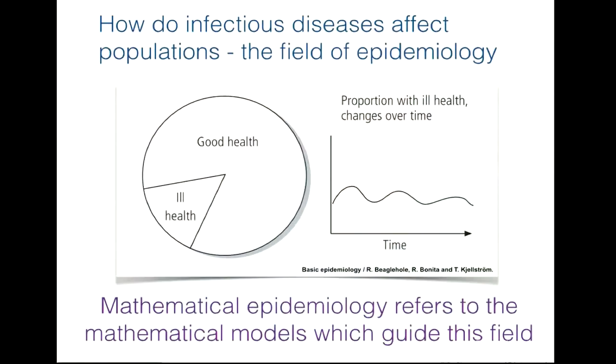The first question of how infectious diseases affect populations is addressed by the field of epidemiology. If we take a full population and divide it into a group of people that have enjoyed good health and a group in a state of ill health, this proportion changes with time. We would like to predict a curve showing the proportion of infected individuals on the y-axis versus time on the x-axis. The field of mathematical epidemiology refers to the models which guide this particular field.